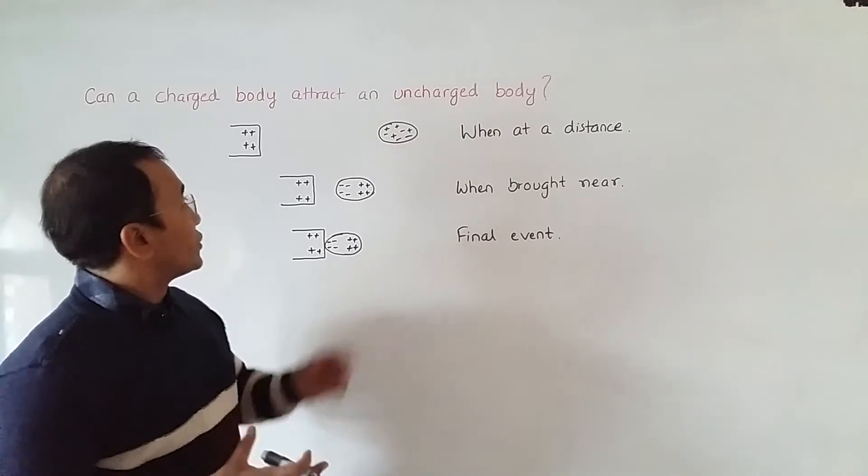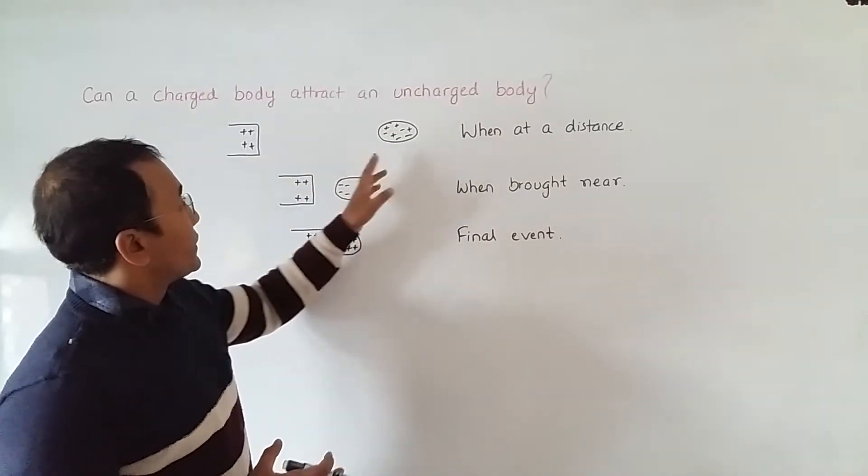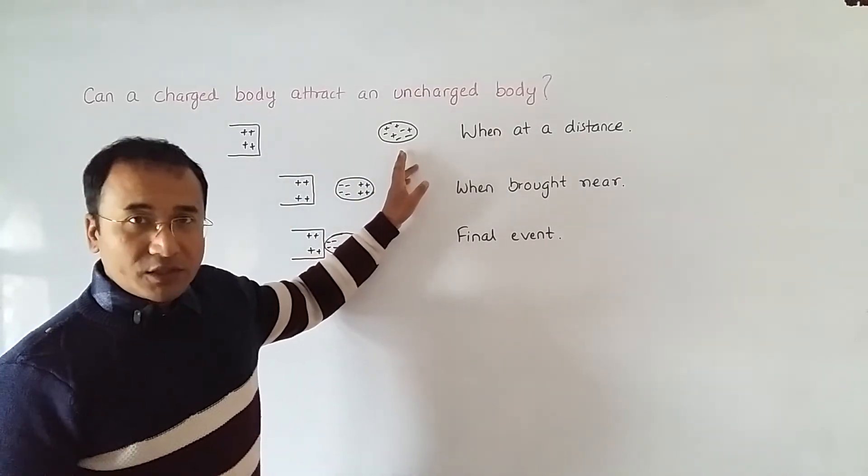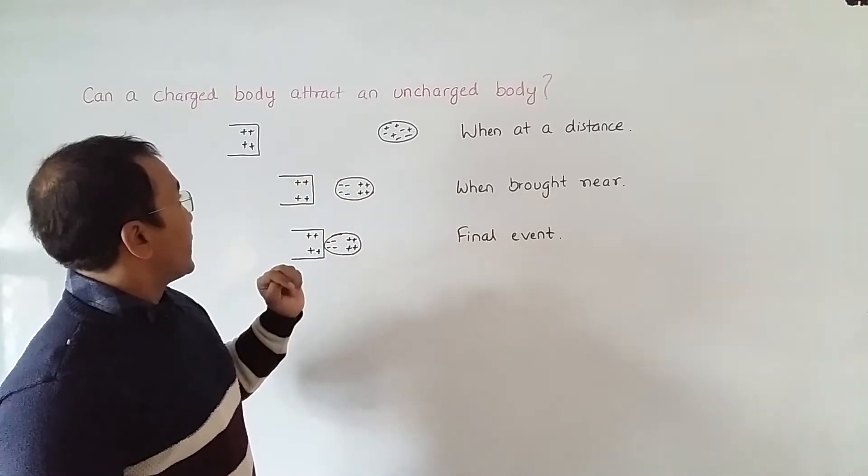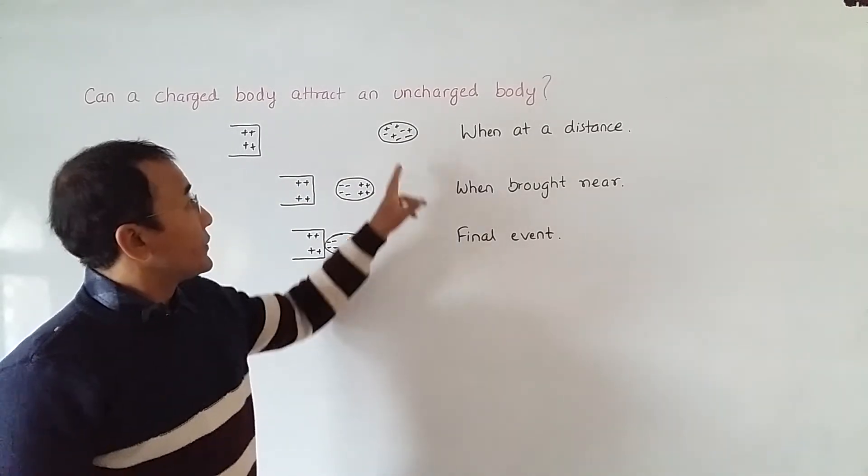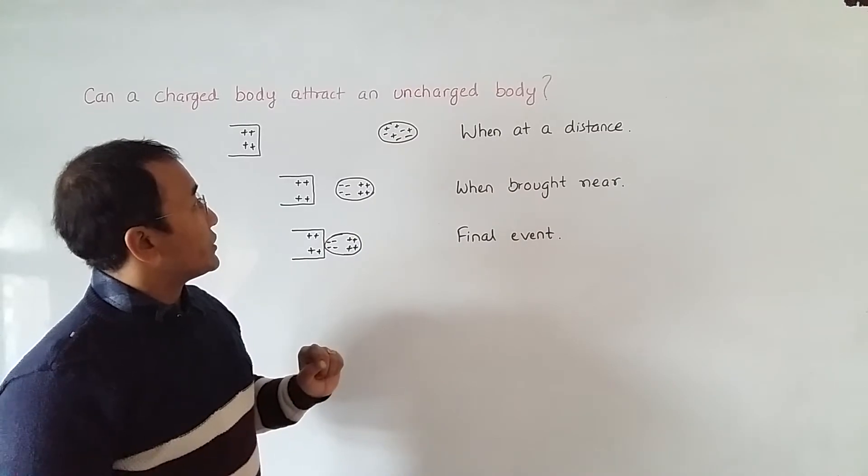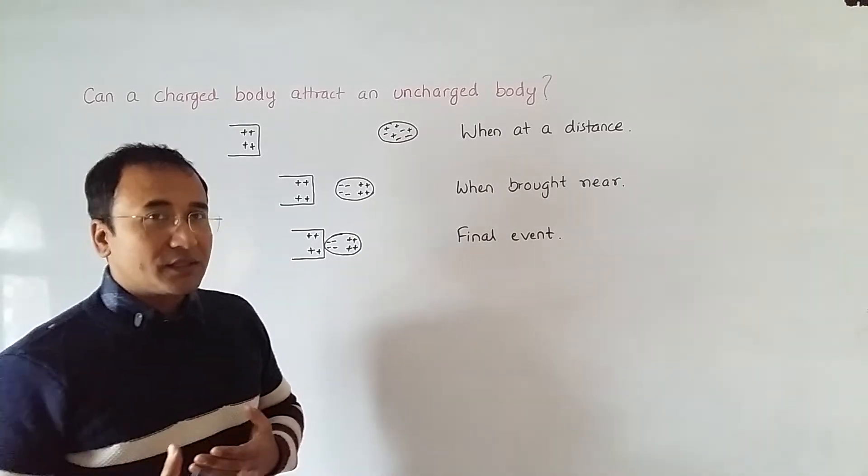The figures show a charged body at a distance from an uncharged body. The charged body has positive charges on its right side, and the uncharged body has equal charges spread randomly throughout.